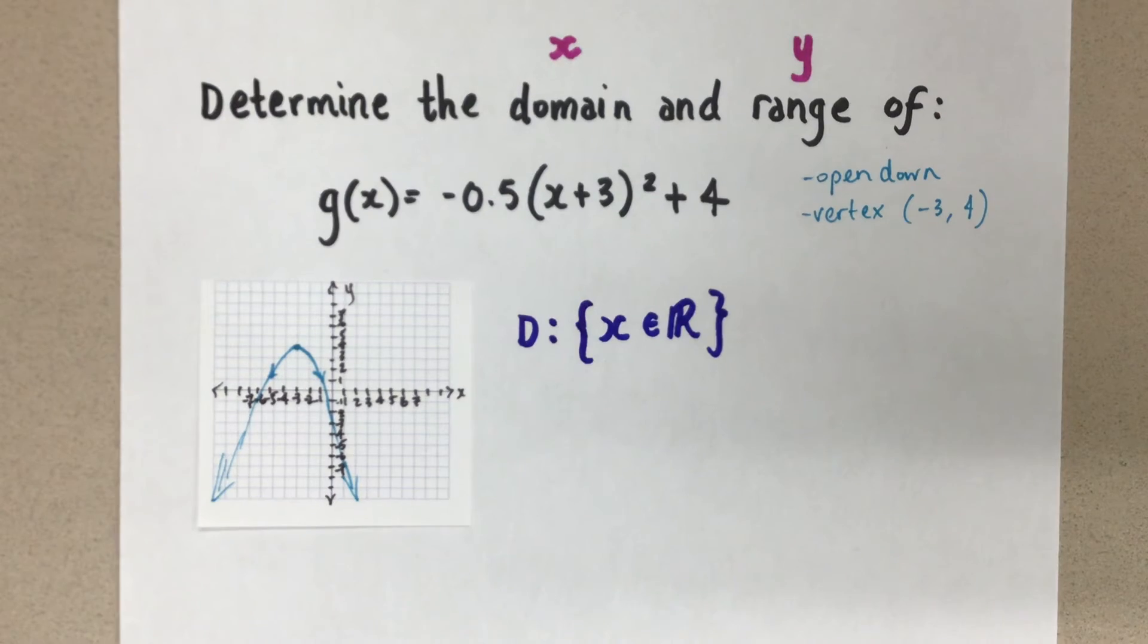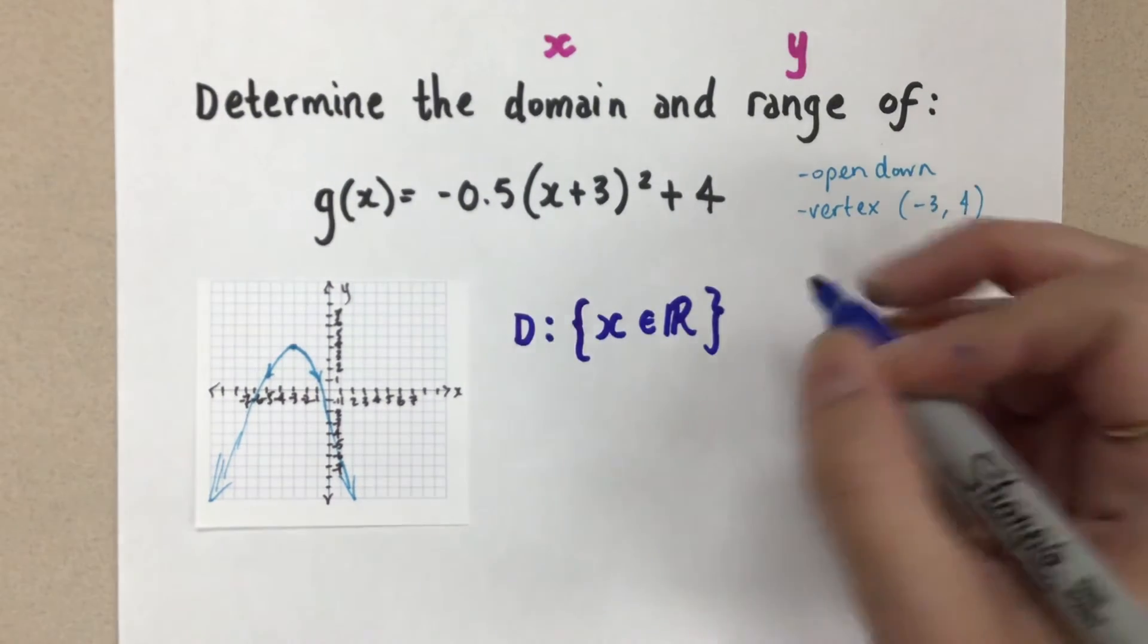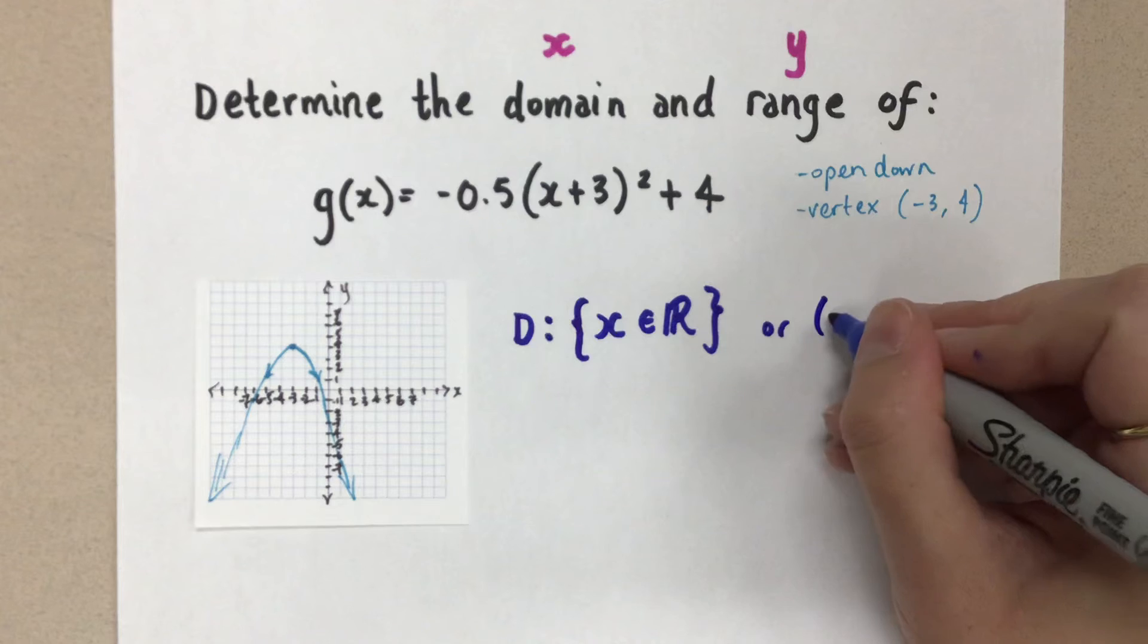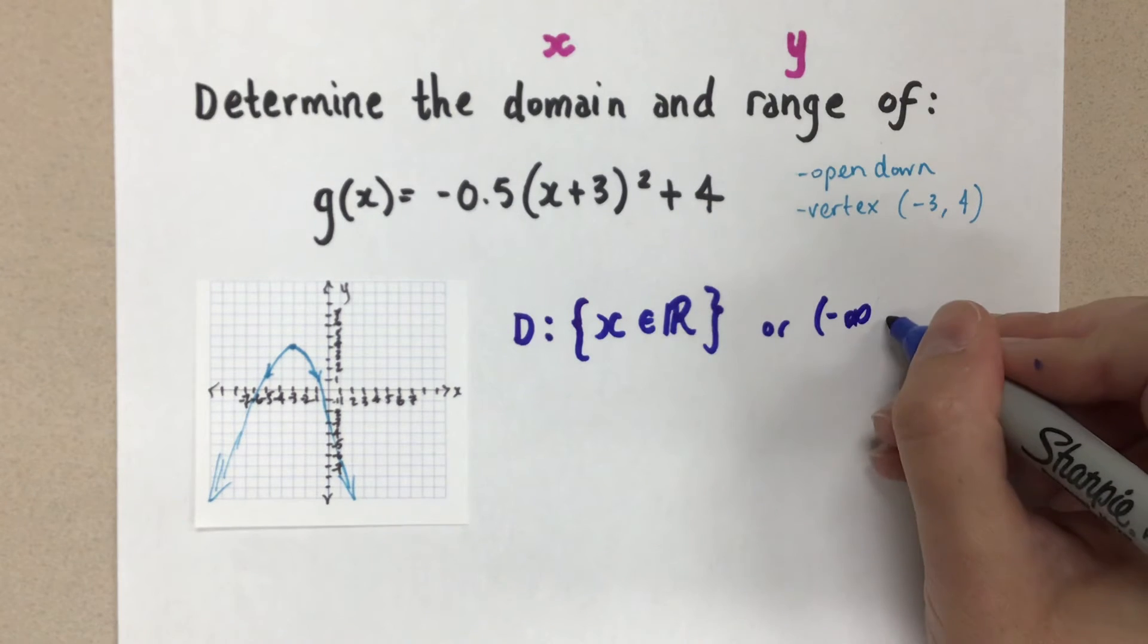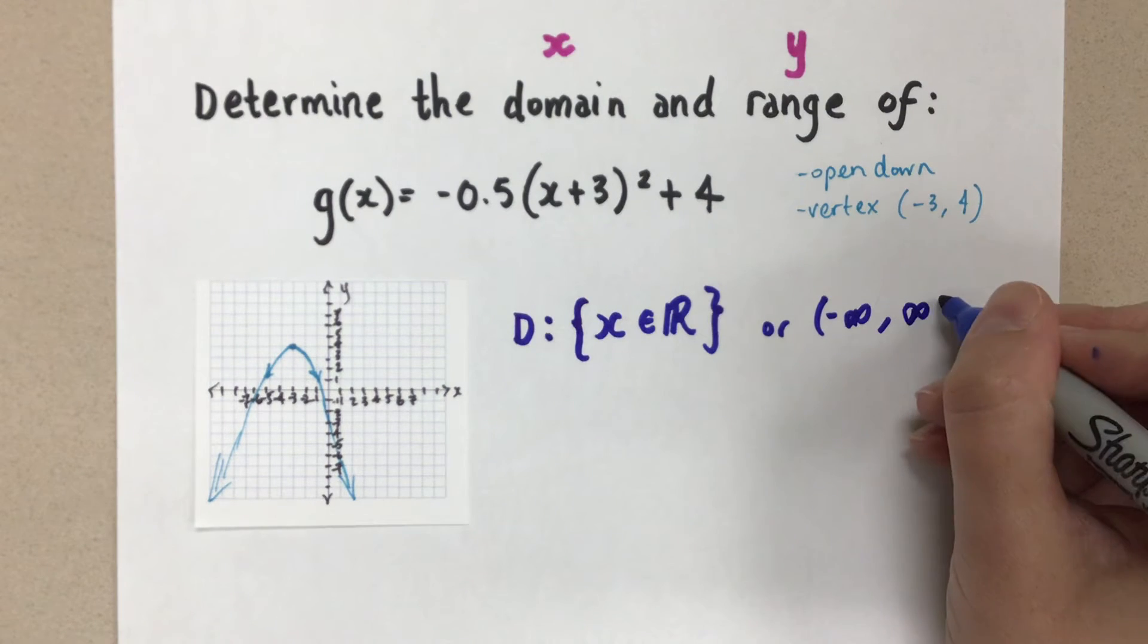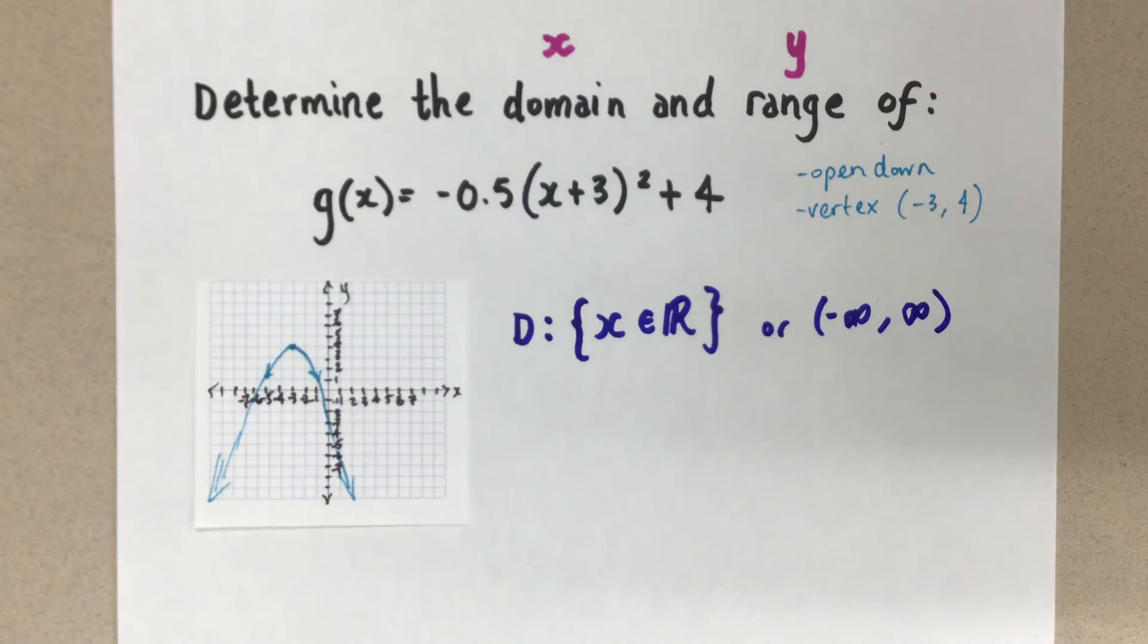Now, if you've been doing this in interval notation, I can write interval notation for those people who are familiar with it. And if you're not yet, that's okay. It's coming on later on. We would write it like this, from negative infinity to positive infinity.